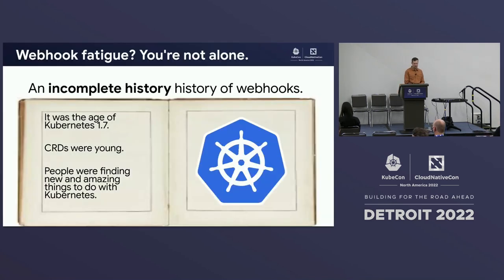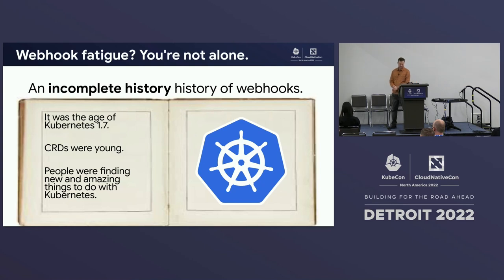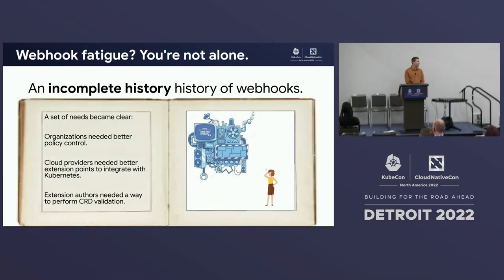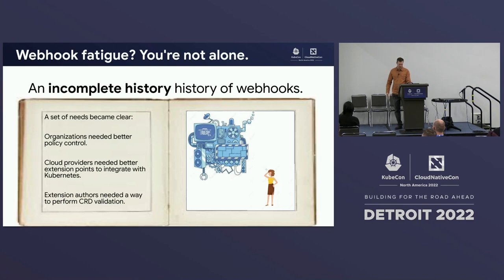Let's get started by talking about the history of admission webhooks. These were introduced back in Kubernetes 1.7, about five years ago when I was first starting to work on the project. CRDs at the time were pretty young, and there were a lot of people looking to use Kubernetes for all sorts of things it couldn't do natively. The extension ecosystem was flourishing. Looking back at the documents explaining what people were trying to accomplish with admission webhooks: organizations needed better policy control, cloud providers needed better extension points to integrate with Kubernetes, and extension authors needed a better way to perform CRD validation. It's actually a pretty accurate list of what webhooks are used for today.